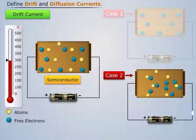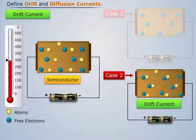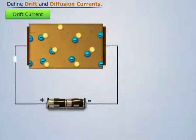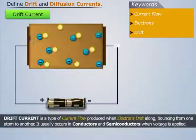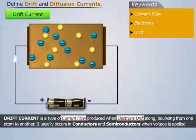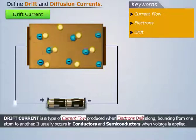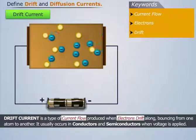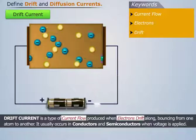Current produced in this manner is termed as drift current. Thus, drift current is a type of current flow produced when electrons drift along, bouncing from one atom to another. It usually occurs in conductors and semiconductors when voltage is applied.